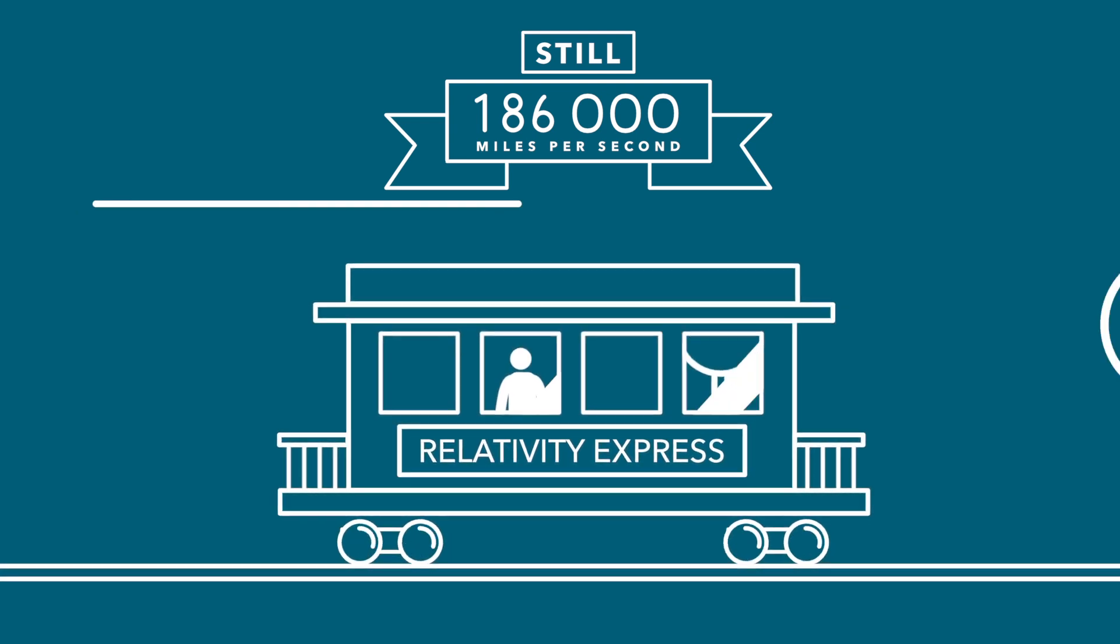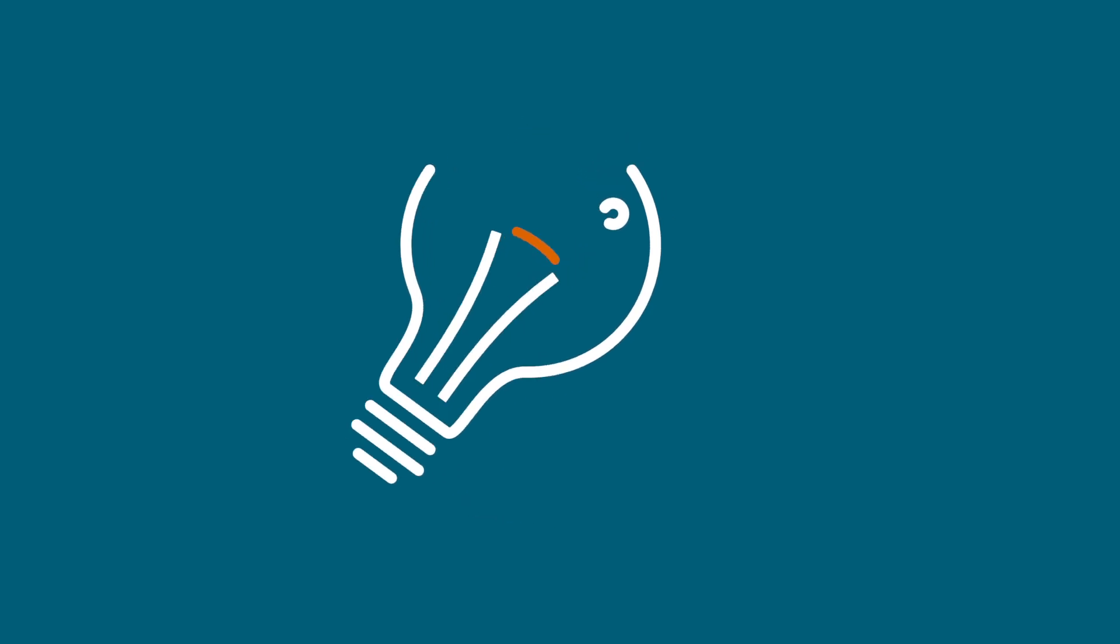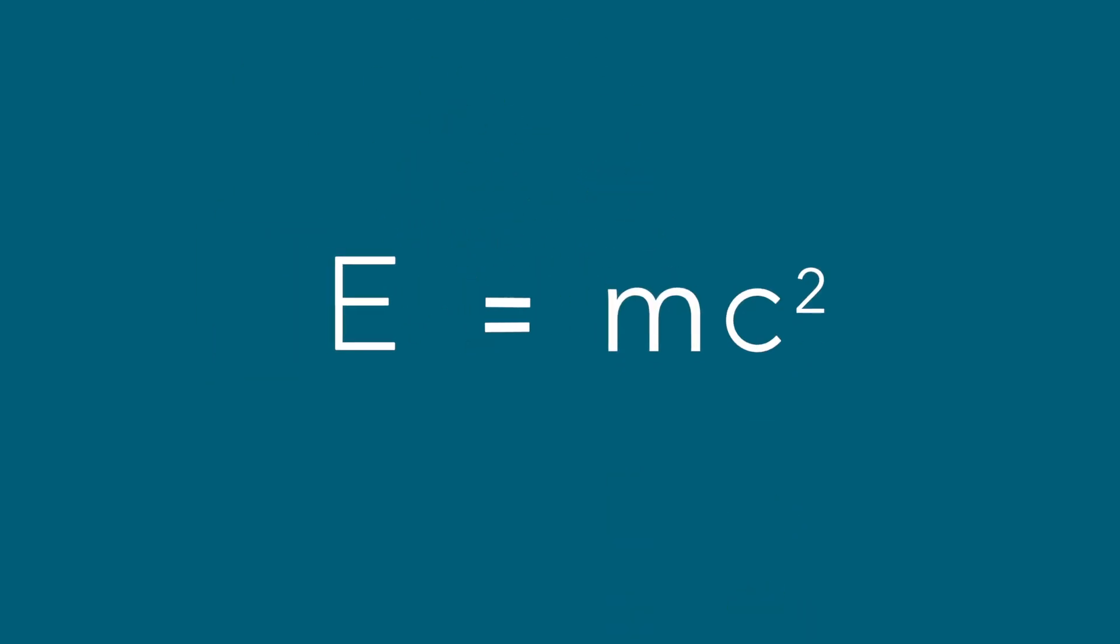Einstein's most famous discovery of that year, however, was that mass and energy are basically the same thing. We know this as E equals MC squared, where E equals energy, M equals mass, and C is the speed of light. But what exactly does that mean?